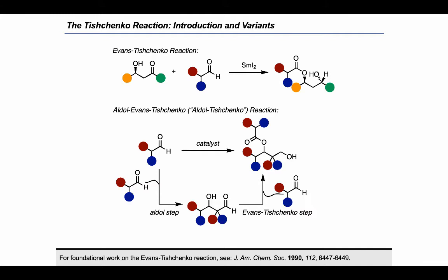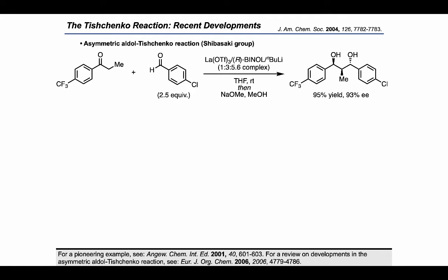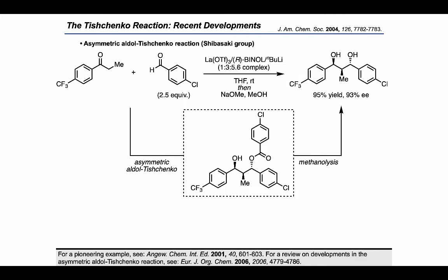With that, I want to transition into looking at some important developments in this family of reactions. The first example comes from the Shibasaki group, who back in 2004 reported an asymmetric aldol-Tyshenko reaction between ketones and aldehydes. The process they developed proceeded by an initial asymmetric aldol-Tyshenko to define three contiguous stereocenters in the intermediate shown, which could then be treated with sodium methoxide to cleave the ester and provide the diol product in highly anti-enriched form.